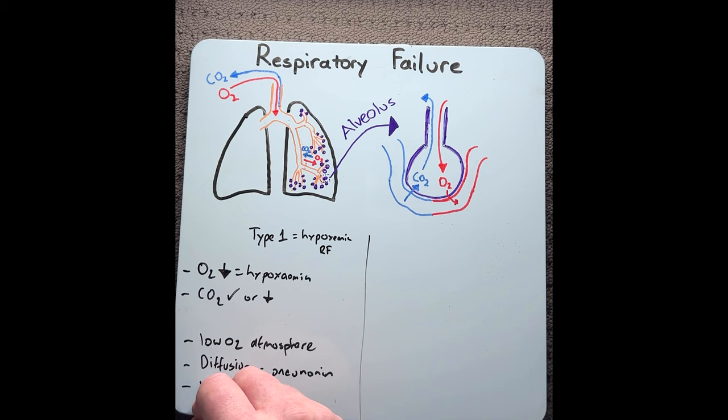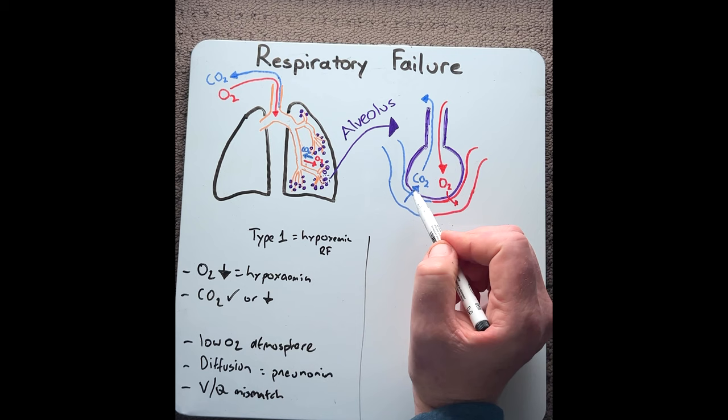Another cause is what we call a VQ mismatch. This is where blood coming to the alveolus doesn't match the degree of ventilation in the alveolus.